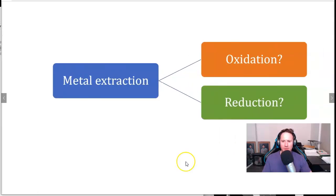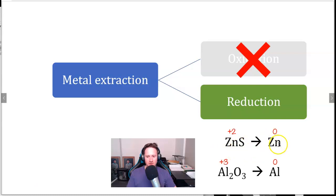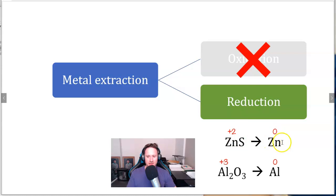To extract metals from their minerals, do we use oxidation or reduction? The answer is reduction. In zinc sulfide, zinc has an oxidation number of +2 — in a compound the oxidation number equals the ion charge, and since the compound is neutral, zinc is +2 and sulfide is −2. Zinc by itself has an oxidation number of zero. Going from +2 to 0 is a decrease in oxidation number, which is reduction. Similarly, aluminium in aluminium oxide has a +3 oxidation number; aluminium by itself is zero. A decrease from +3 to 0 is also reduction. Reduction is what we need to extract these metals.